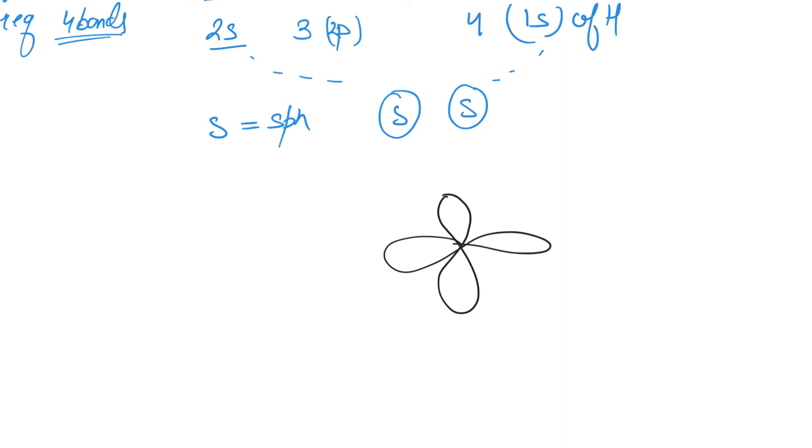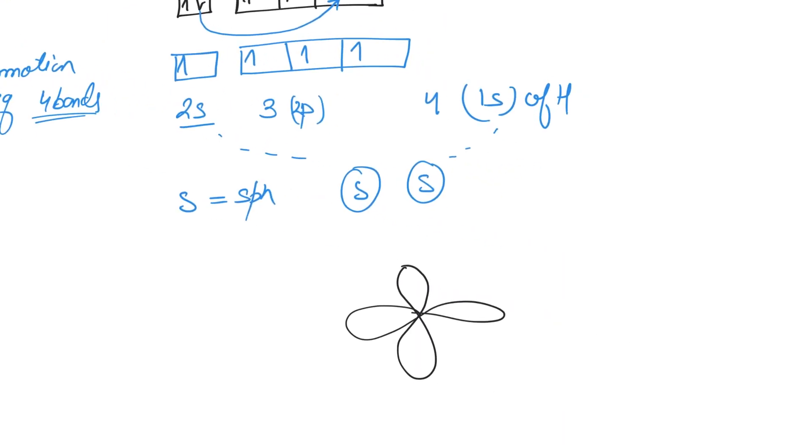The p orbitals are somewhat like this, so we have pₓ, pᵧ, and pᵧ. What is x, y, and z? They're axes—so we have an x-axis, y-axis, and z-axis, basically the three dimensions.